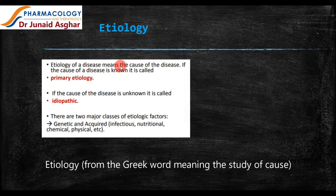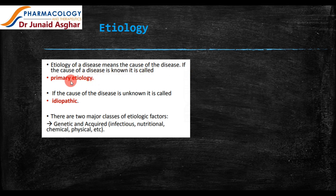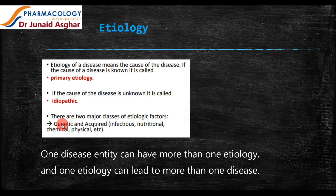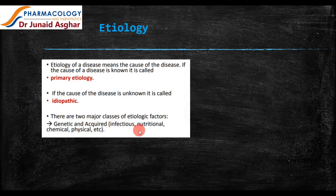The etiology of a disease means the cause of a disease. If the cause is known, it is called primary etiology; if the cause is unknown, it is called idiopathic. There are two major classes of etiological factors: genetic and acquired. It may be determined by your genes or acquired by means of infections. Nutritional changes may also lead to certain pathologies, and there could be chemical and physical factors such as chemical agents, injury, or trauma.